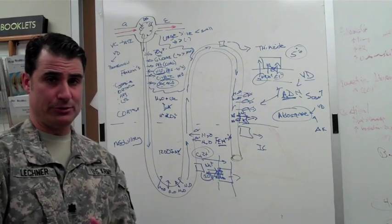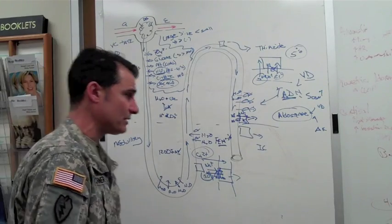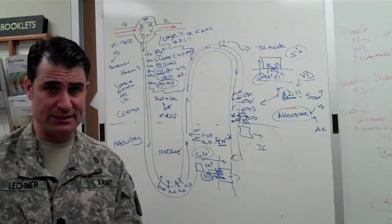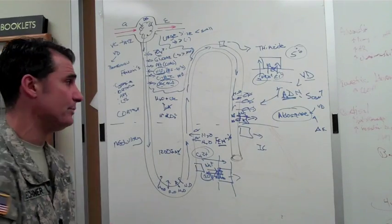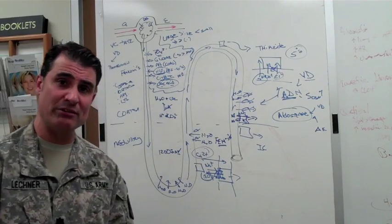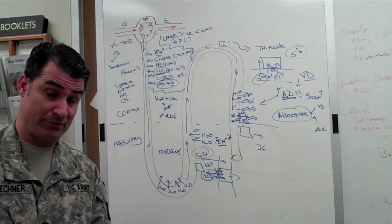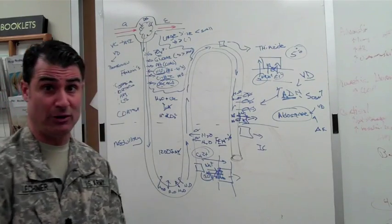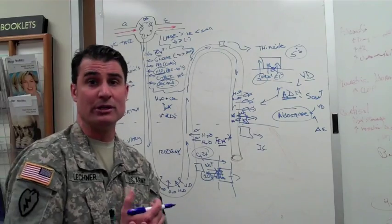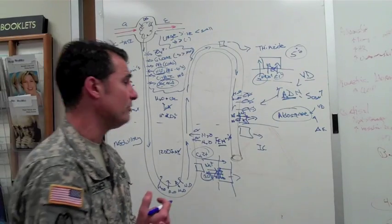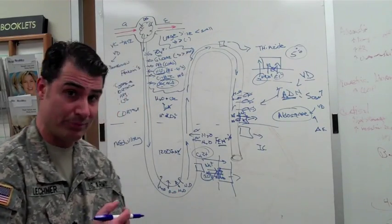If you were volume depleted for too long a period of time, eventually what's going to happen is that potassium is going to fall low and your body knows that you can go into arrhythmia if you get too low of a potassium.